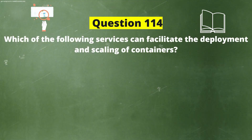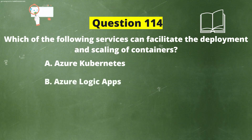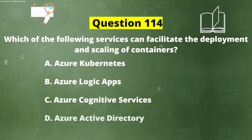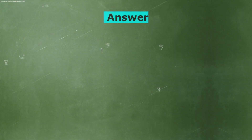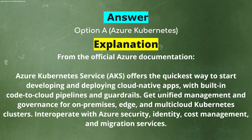Next question. Which of the following services can facilitate the deployment and scaling of containers? Option A: Azure Kubernetes. Option B: Azure Logic Apps. Option C: Azure Cognitive Services. Option D: Azure Active Directory. The correct answer is Option A, Azure Kubernetes. Azure Kubernetes Service offers the quickest way to start developing and deploying cloud-native apps, with built-in code-to-cloud pipelines and guardrails. It provides unified management and governance for on-premises, edge, and multi-cloud Kubernetes clusters, and interoperates with Azure security, identity, cost management, and migration services.